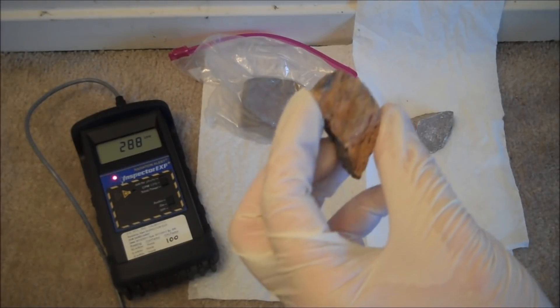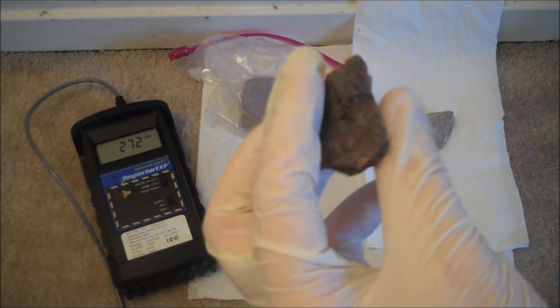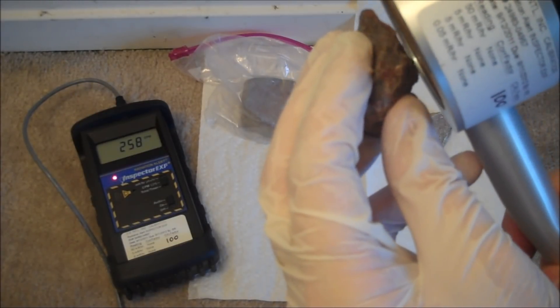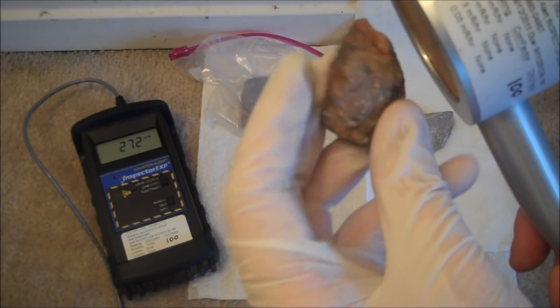Some rocks, like this dinosaur bone, can contain small amounts of uranium inside of them. This is detectable with a simple Geiger counter.